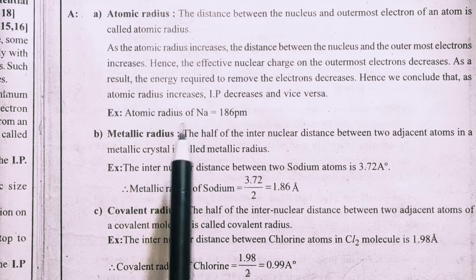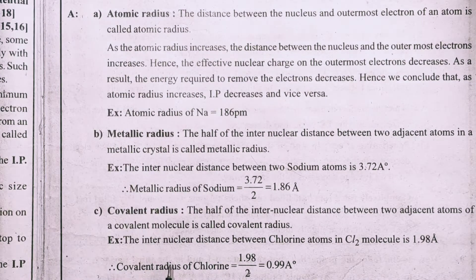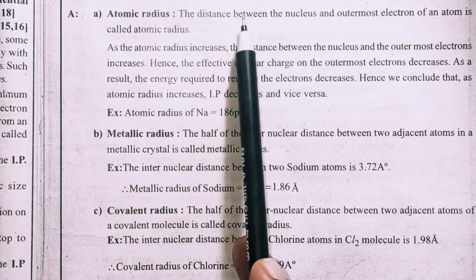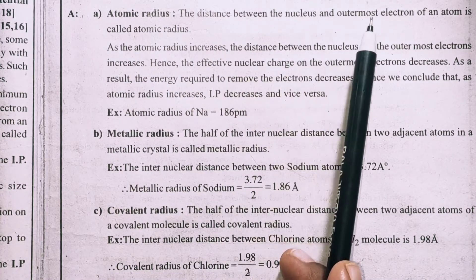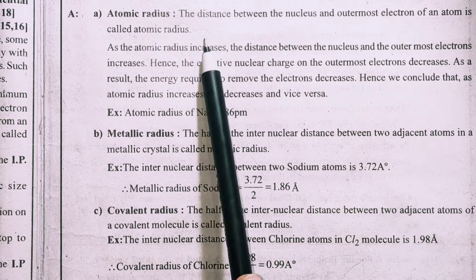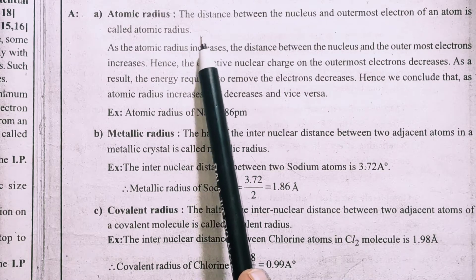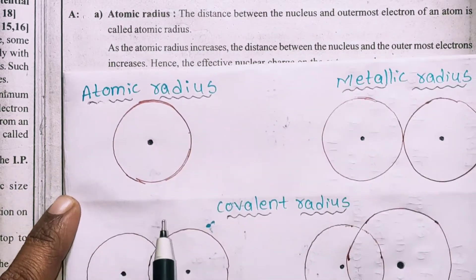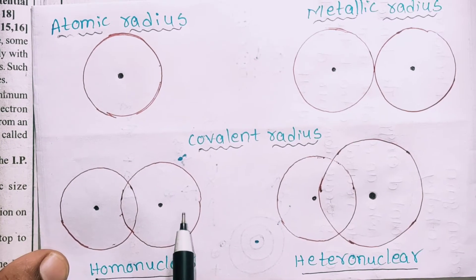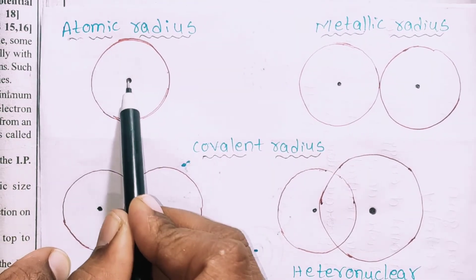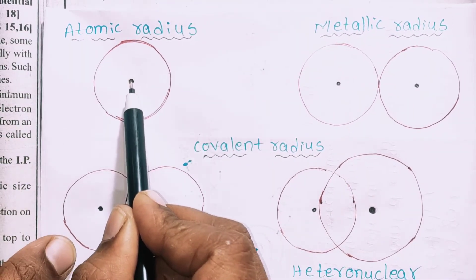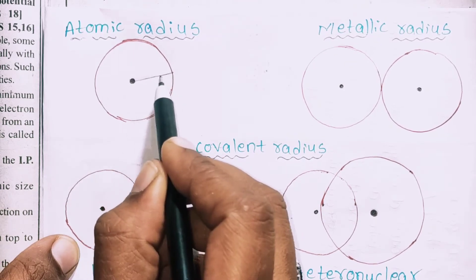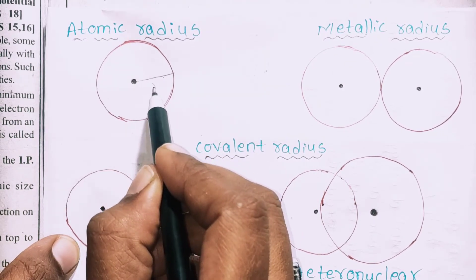Atomic radius, metallic radius, covalent radius. Atomic radius means the distance between the nucleus and outermost electron of an atom is called atomic radius. When atomic structure is normal, the atom extends from the center of the nucleus to the outside — that is the distance of the radius.